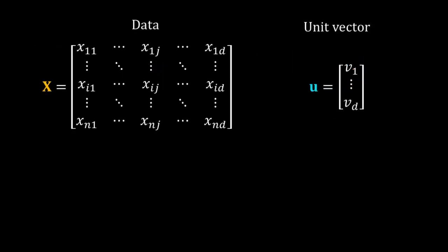Now let me generalize the same for a bigger data matrix of n by d size. X is my data matrix. U is the unit vector. X is an n by d matrix. I have d number of variables and n number of samples. So u is a d by 1 vector.